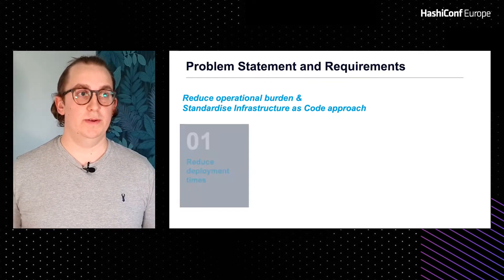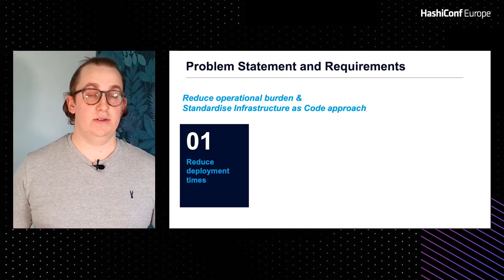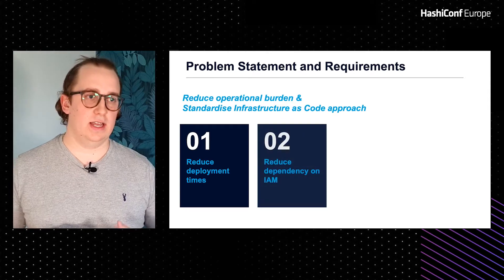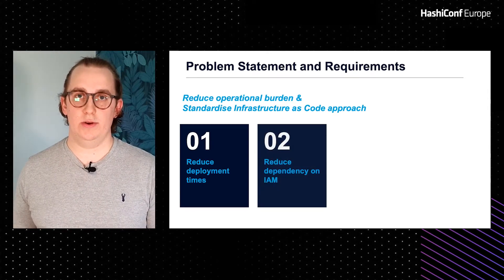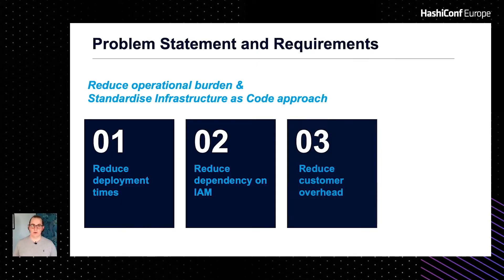The requirements were to reduce the deployment times, to reduce the dependency on the IAM team for things like pull requests into our GitHub code repository and general support tasks. Next was to reduce the customer overhead, making it easier for them to configure and manage their Vault configuration and lowering the bar of entry to allow more users to consume Vault. Lastly, federating the configuration ownership — giving teams the power to build what they need and breaking down the monolith to smaller units so that it can be more easily tested and deployed.